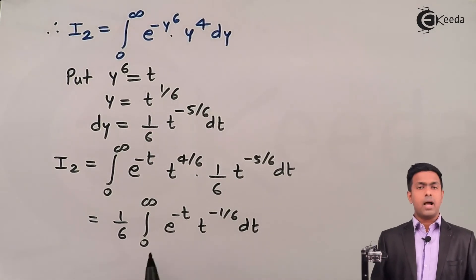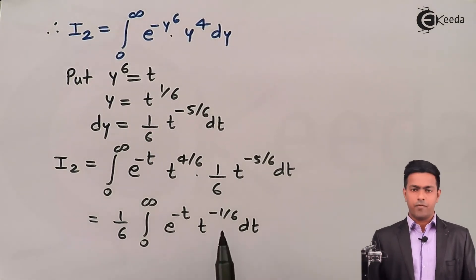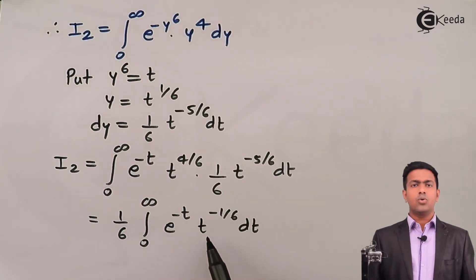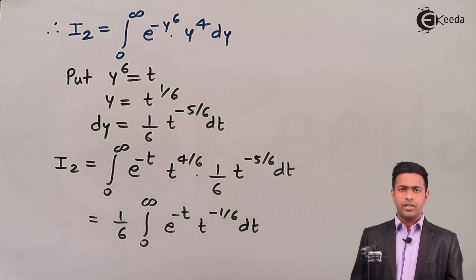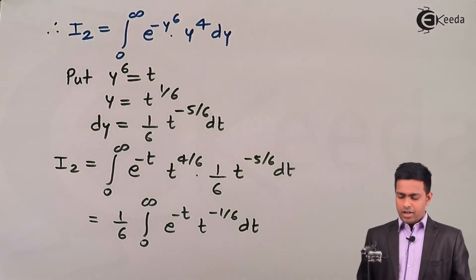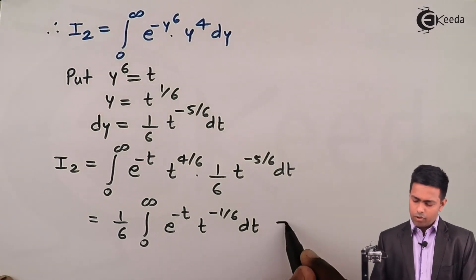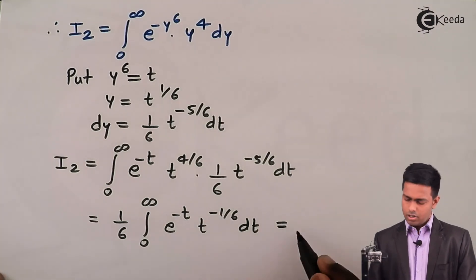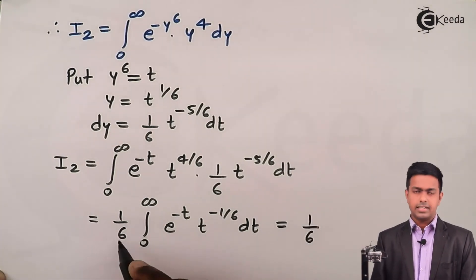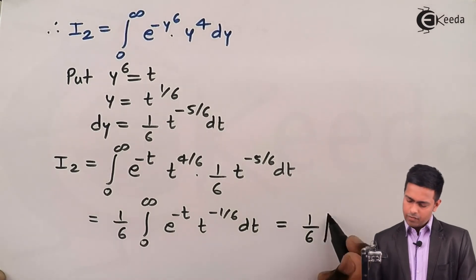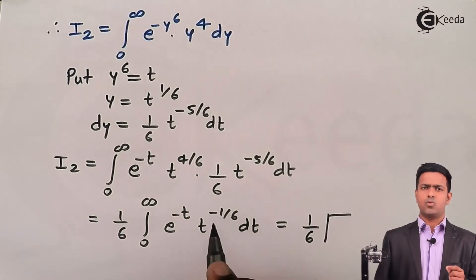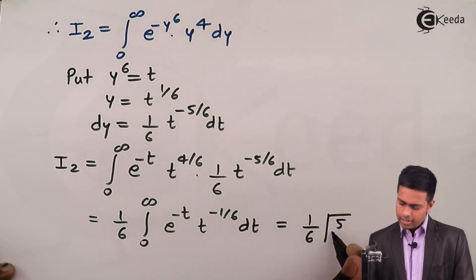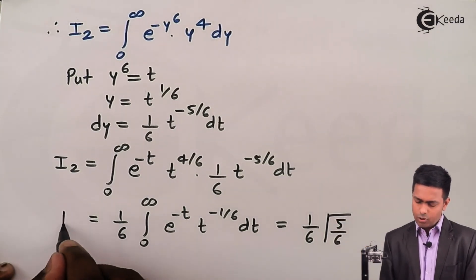This again matches the definition of the gamma function. The power of t is −1/6, so adding 1 gives: −1/6 + 1 = 5/6. Therefore, I₂ = (1/6) · Γ(5/6).